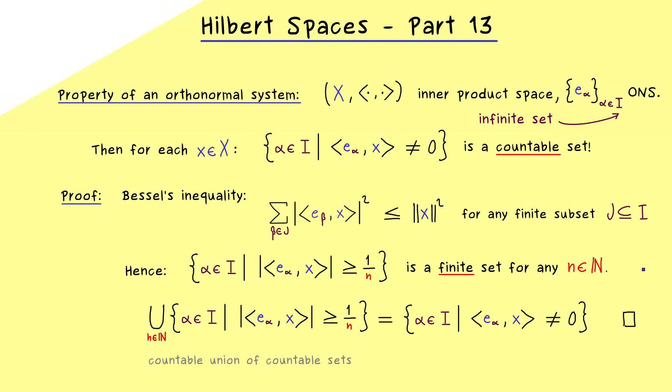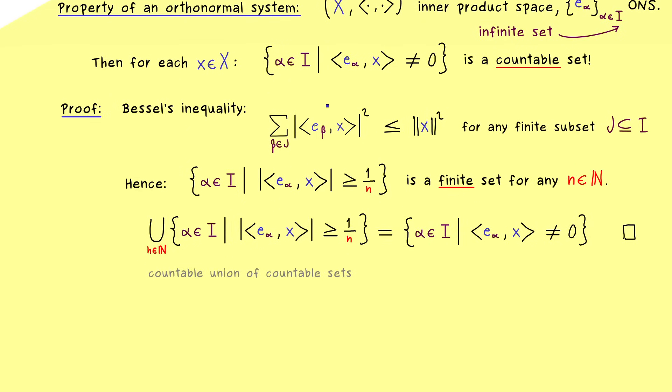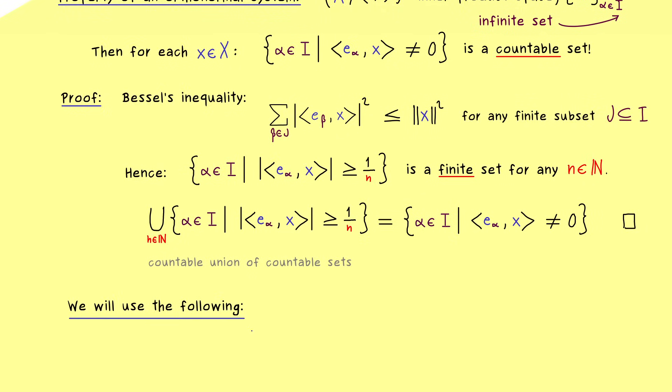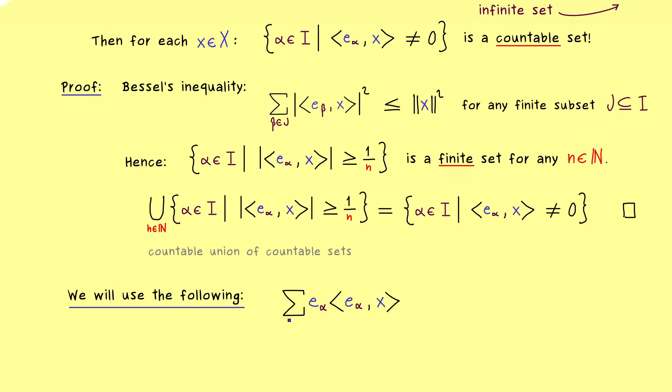Our index set I can be really huge, but the corresponding set we have here can only be countable. This is important because we will often use the sum symbol over the index set I. This means we can only calculate with that if the sum symbol makes sense. For example, we will often see the combination e_alpha with e_alpha like that, where alpha goes through the whole index set I. And there we already know, that only countably many elements contribute to this sum at all.